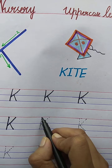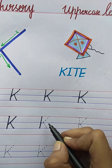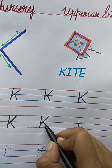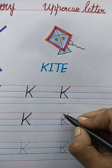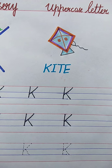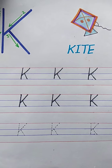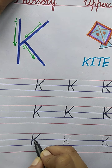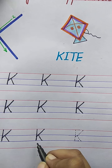Now again, put your pencil on the red line, match the dots, make the letter K. Standing line, then slanting line, one more slanting line. K for kite. See here again: standing line, slanting line, slanting line. K for kite. Speak with me: K for kite. Very good. Again: standing line, slanting line, slanting line. Standing line, slanting line, slanting line. Very good.